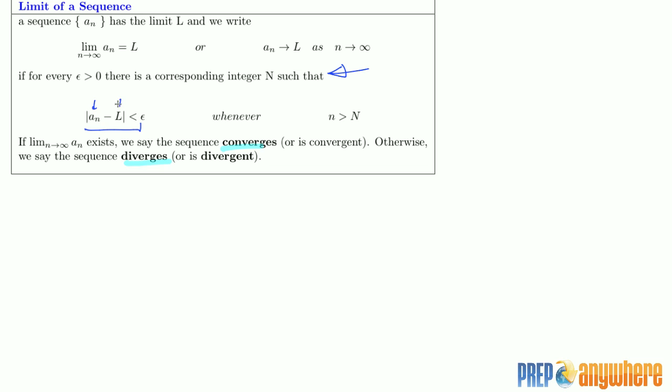The statement is saying the distance between a_n and L can be made arbitrarily small, provided that n is bigger than some fixed number N. If I had to draw a rough picture of that statement, we have, let's say,